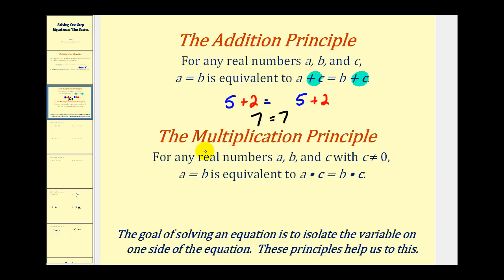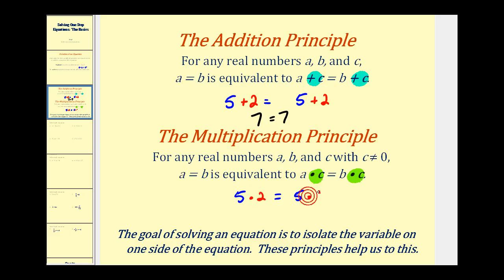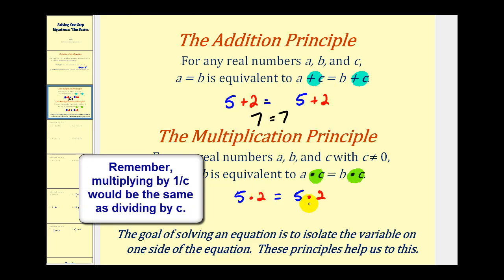There's a similar idea with multiplication. If we know that a is equal to b and we multiply both sides of the equation by c, the equation will still be true. For example, if we start with five equals five and multiply both sides by two, the equation is still true — now it would be ten equals ten.